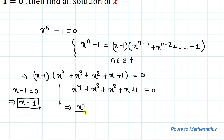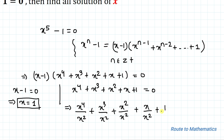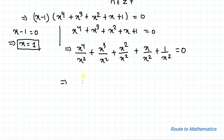So we have x to the power 4 divided by x squared, plus x cubed divided by x squared, plus x squared divided by x squared, plus x divided by x squared, plus 1 divided by x squared, equals to 0. This gives us x squared plus x plus 1 plus 1 by x plus 1 by x squared equals to 0.